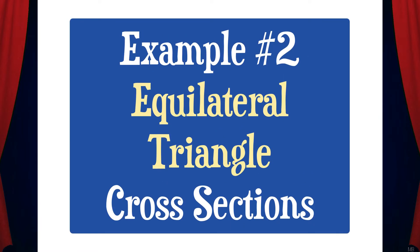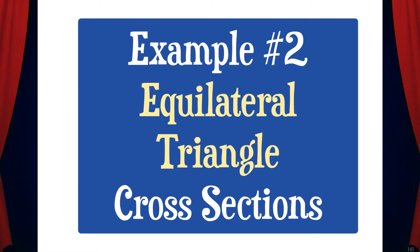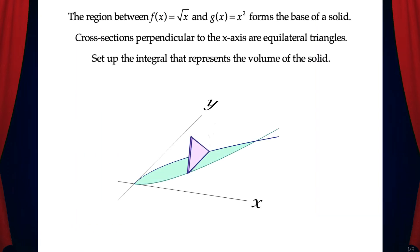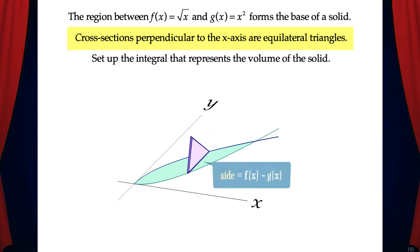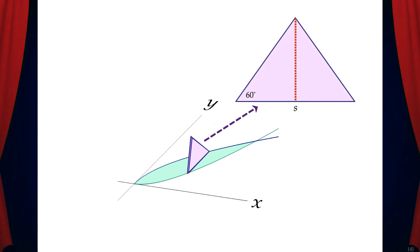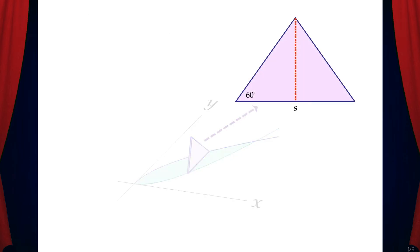Example 2: equilateral triangle cross-sections. In this example, we'll use the same region as the previous example to form the base of a solid. But now cross-sections perpendicular to the x-axis are equilateral triangles. Set up the integral that represents the volume of the solid. In order to solve this, we need to find an equation that gives us the area of an equilateral triangle in terms of its side. Here's a diagram of an equilateral triangle. We know that the area is one half base times height, and we know that the base is s, which stands for side.